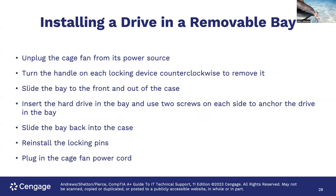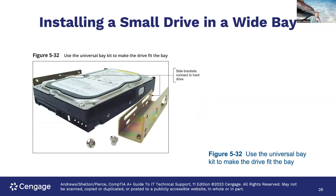Installing a drive in a removable bay: unplug the cage fan from its power source. Turn the handle on each locking device counterclockwise to remove it. Slide the bay to the front and out of the case. Insert the hard drive in the bay and use two screws on each side to anchor the drive. Slide the bay back into the case, reinstall the locking pins, and plug in the cage fan power cord. Here's an example of a universal bay kit — a bracket to make a narrower drive fit in a wider bay. Haven't seen one of these in a long time; it's usually for older systems.